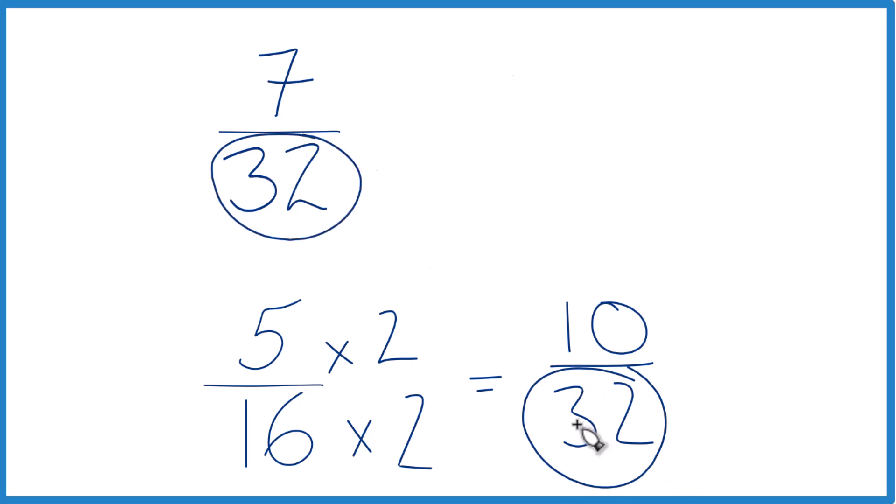With the same denominator, we just need to compare the numerators. 10 is greater than 7, so 10/32 is greater than 7/32. And since 10/32 and 5/16 are the same, 5/16 is greater than 7/32.